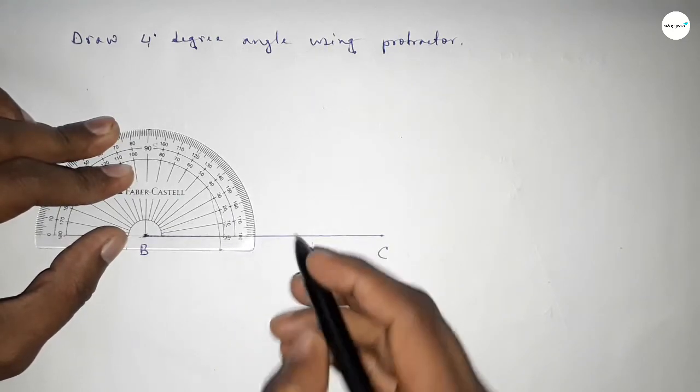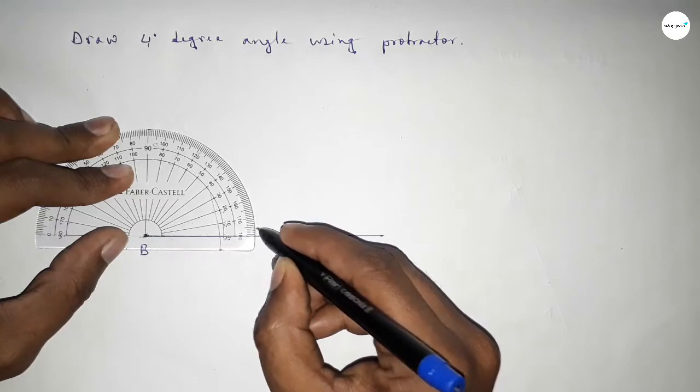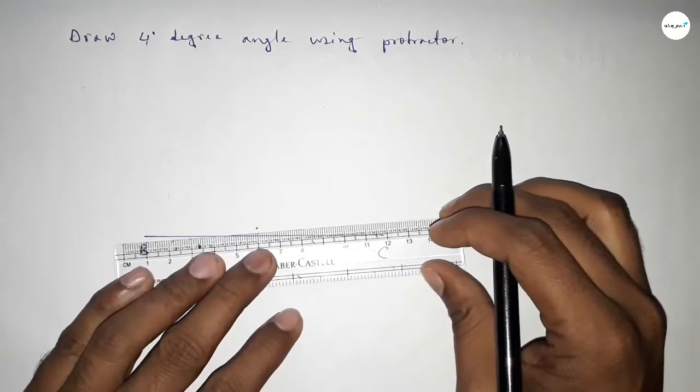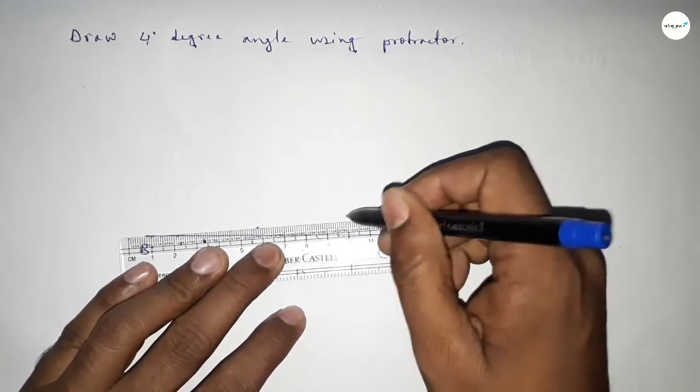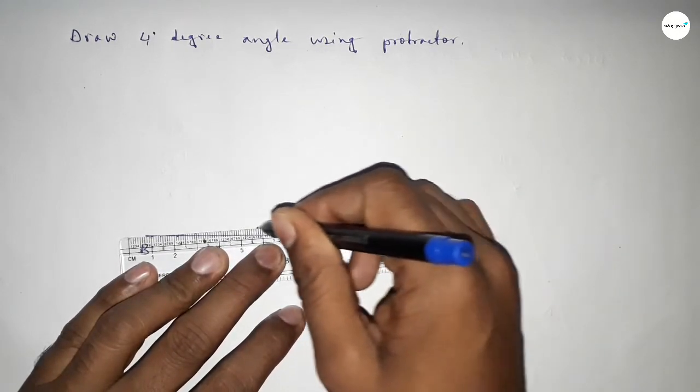So this is 4 degrees. Now joining this to get a 4-degree angle.